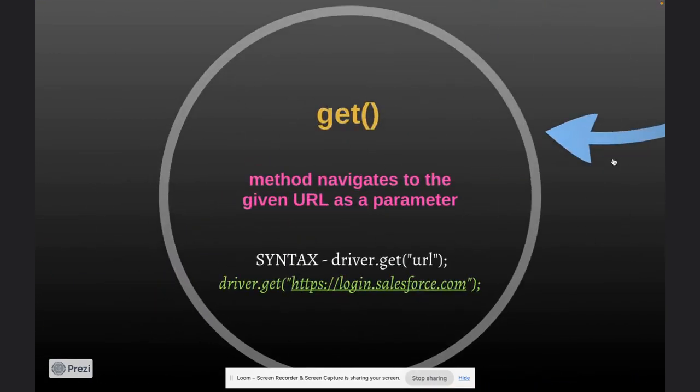If you have seen my previous two or three videos, you have seen the get method somewhere. Looking at the definition, it says the method navigates to the given URL as a parameter. If you look at the syntax, you realize this is the method we were using to navigate to a URL. We'll be seeing this in the actual code, but for now let's jump to the methods we don't know yet.